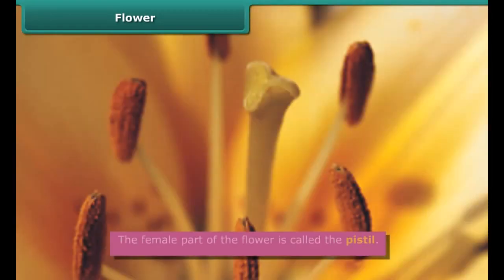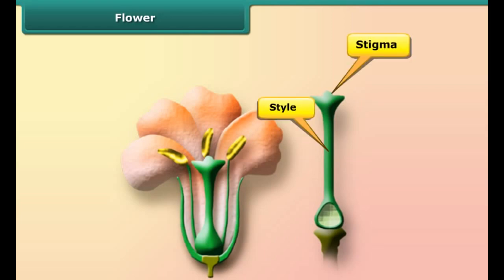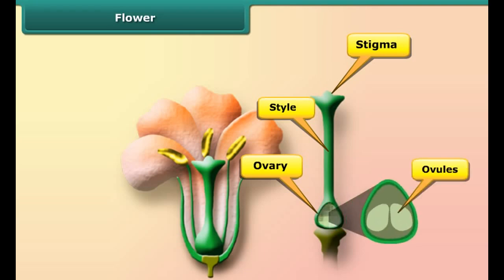The female part of the flower is called the pistil. It is the innermost part of the flower. The pistil has three parts: stigma, style, and ovary. The stigma is the sticky surface at the top of the pistil — it traps and holds the pollen. The style is a tube-like structure that holds up the stigma. The style leads down to the ovary, which contains the ovules.